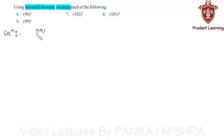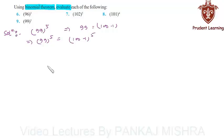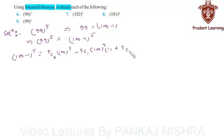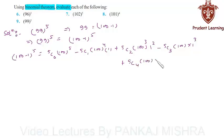Finally we have to evaluate 99 to the power of 5. Here we can write 99 as 100 minus 1, which implies 99⁵ equals (100 minus 1) whole raised to the power of 5. By using the Binomial Theorem we can write (100 minus 1)⁵ equals 5C0·100⁵ minus 5C1·100⁴·1 plus 5C2·100³·1² minus 5C3·100²·1³ plus 5C4·100·1⁴ minus 5C5·1⁵.